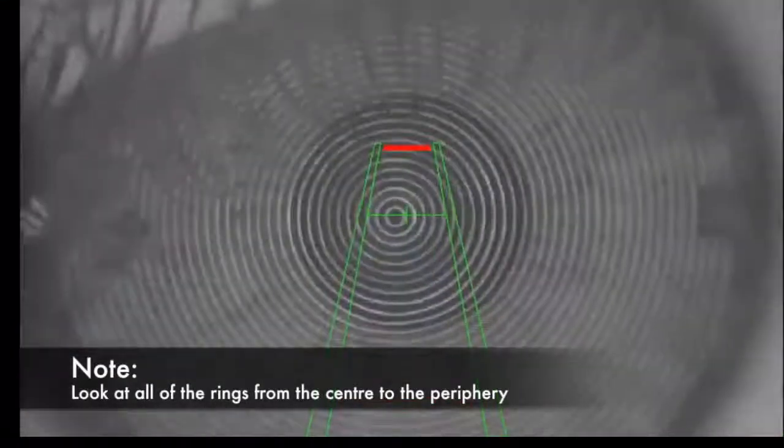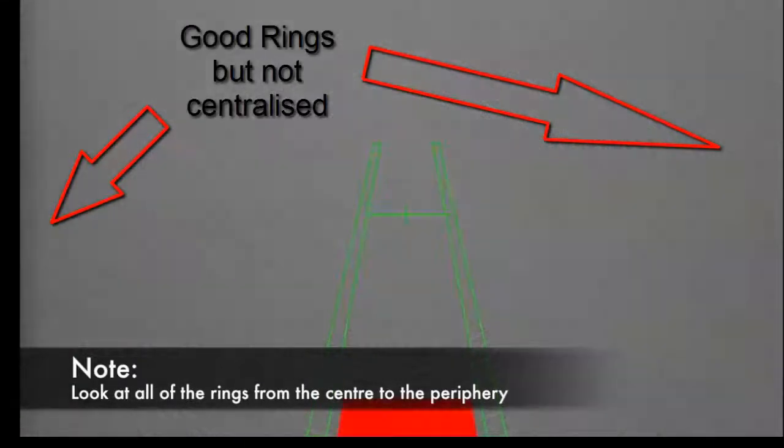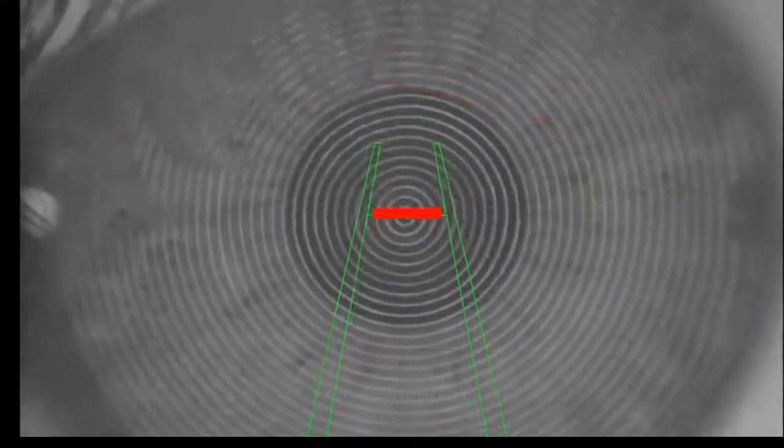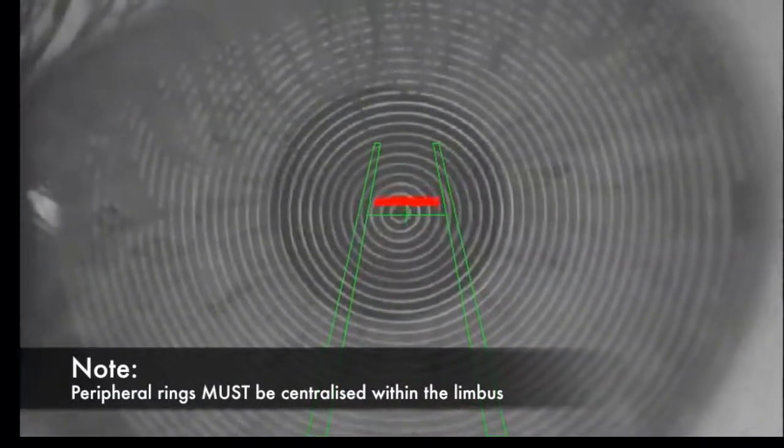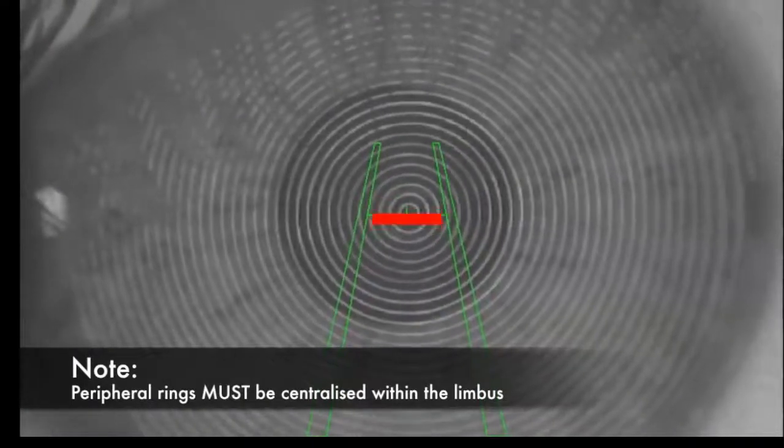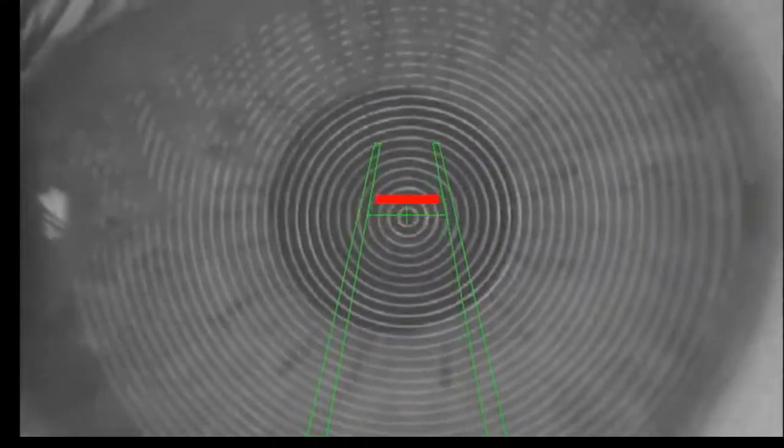Once we have the fixation centralized, we need to look at the data quality. This is where we want to analyze for ring jam before saving the desired topography. In this example here, we see that all of the rings from the center to the periphery are intact and are of good quality.